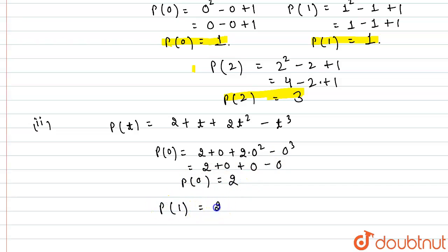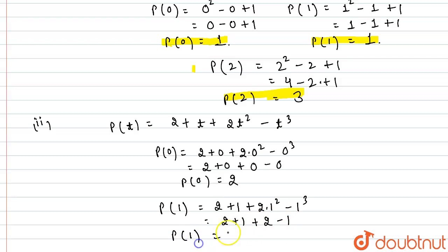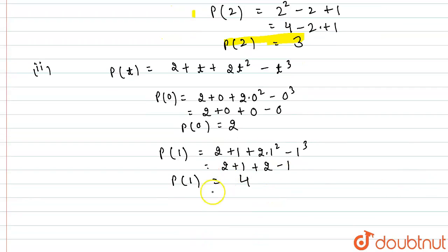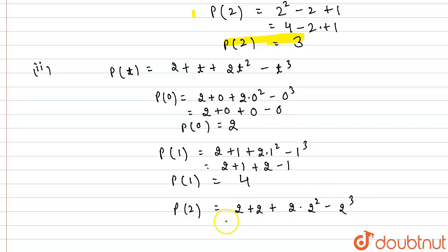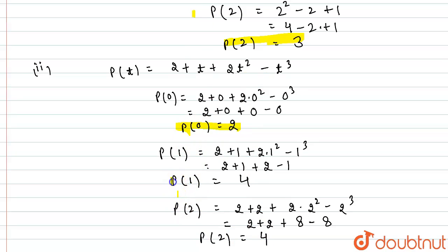Now p(1) will be 2 plus 1 plus 2 multiplied by 1 squared minus 1 cubed, which is 2 plus 1 plus 2 minus 1. So I will get p(1) as 4. Now p(2) will be 2 plus 2 plus 2 into 2 squared minus 2 cubed, which is 2 plus 2 plus 8 minus 8. So this 8 and 8 will cancel each other and we will be left with 4. So these are the values for p(0), p(1) and p(2) for this second given polynomial.